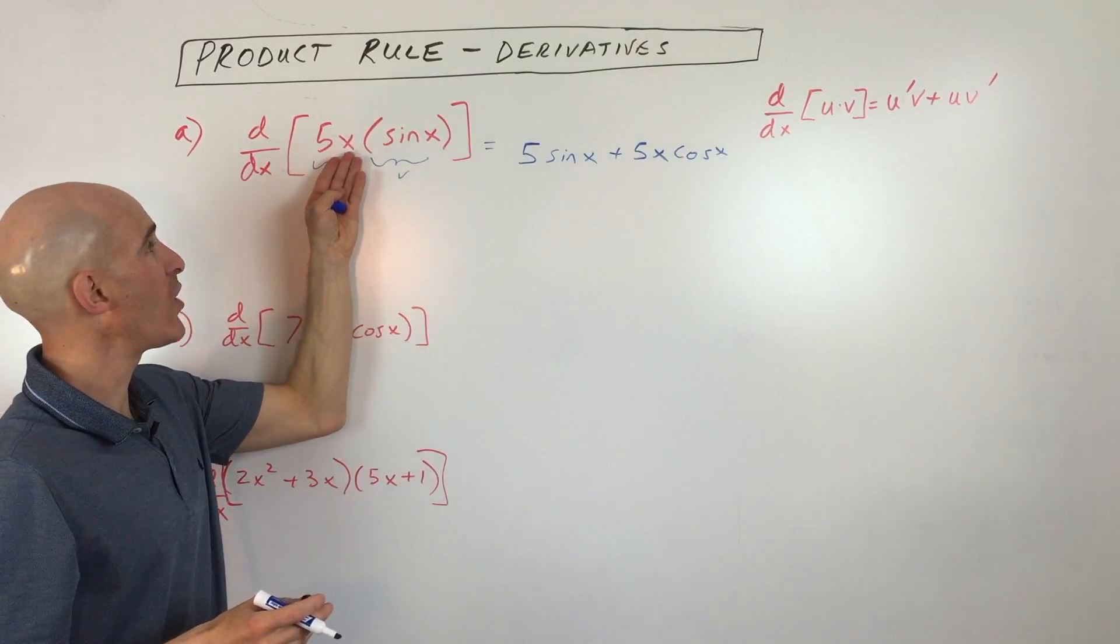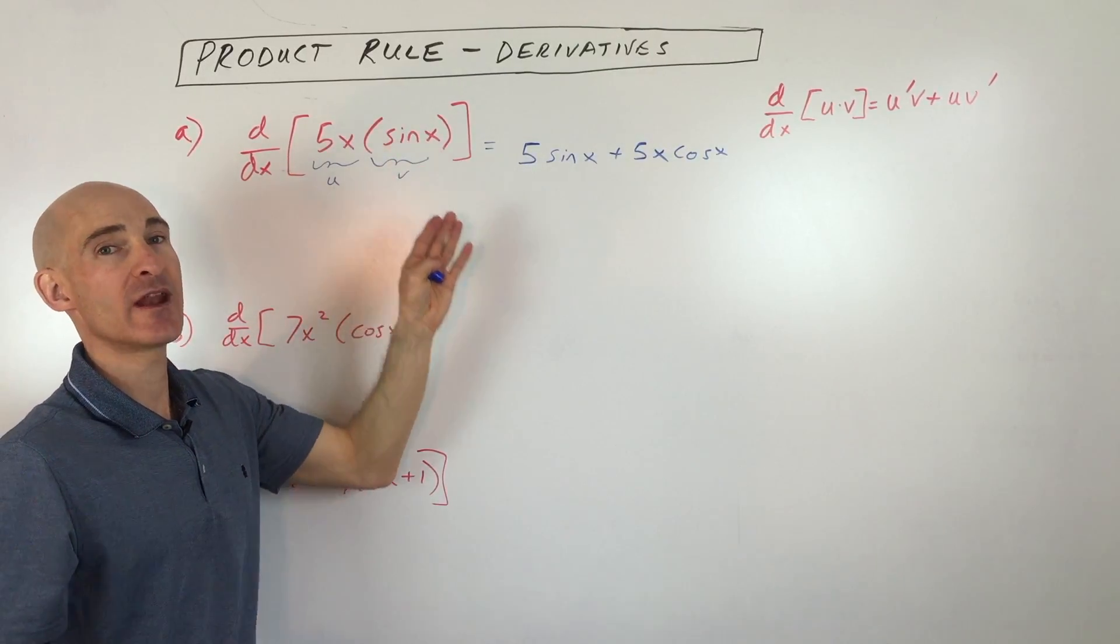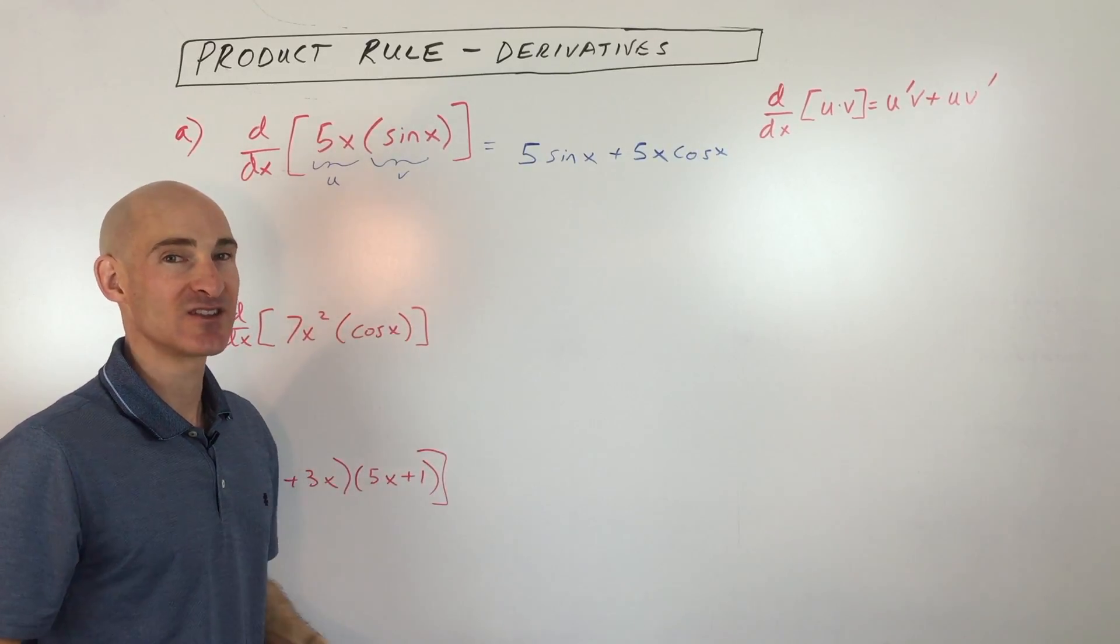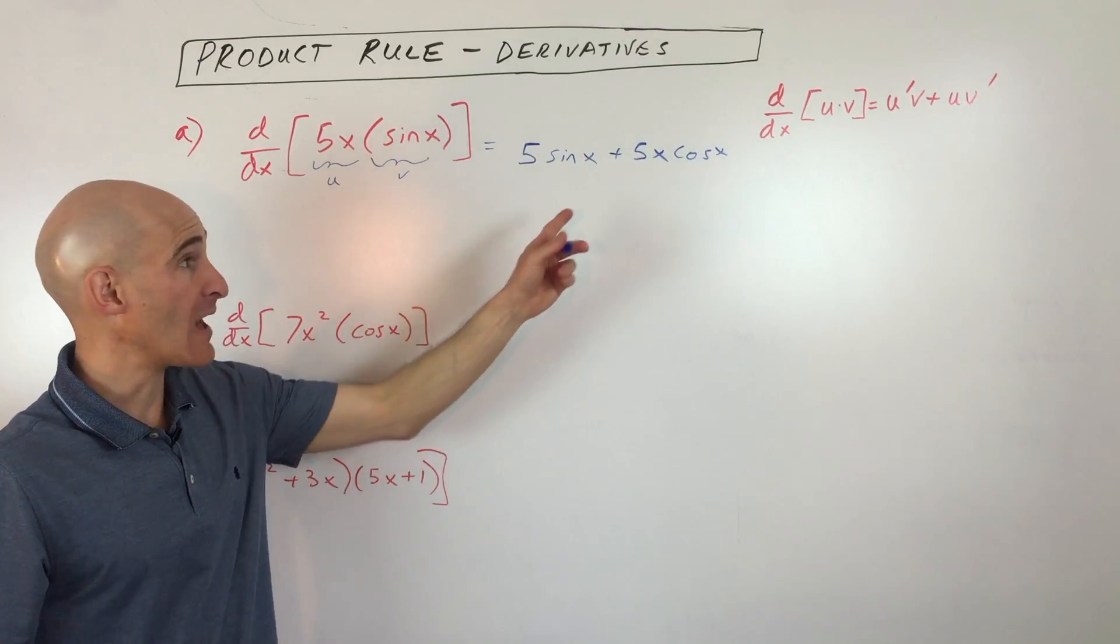So I just think of it in that fashion. I'm taking the derivative of the one, leaving the other one alone, and then I reverse it, so I do the opposite. Whichever one I take the derivative of the first time, I leave that one alone and take the derivative of the other one, and then you add them together.